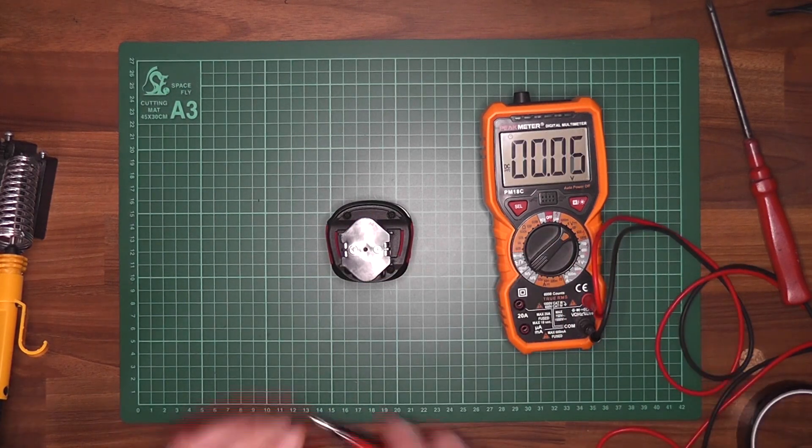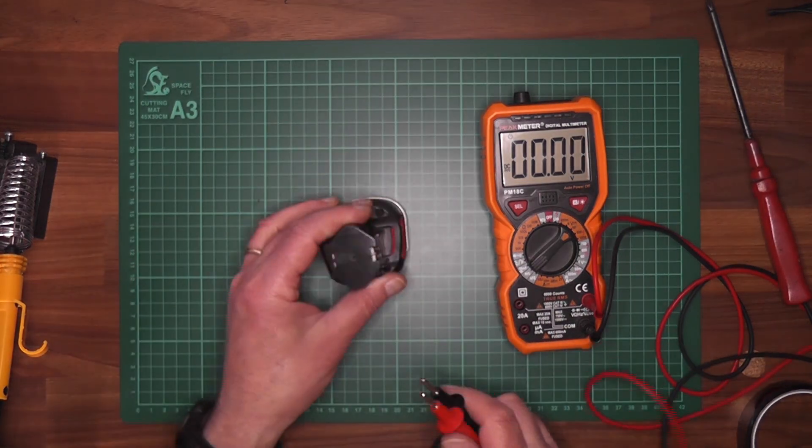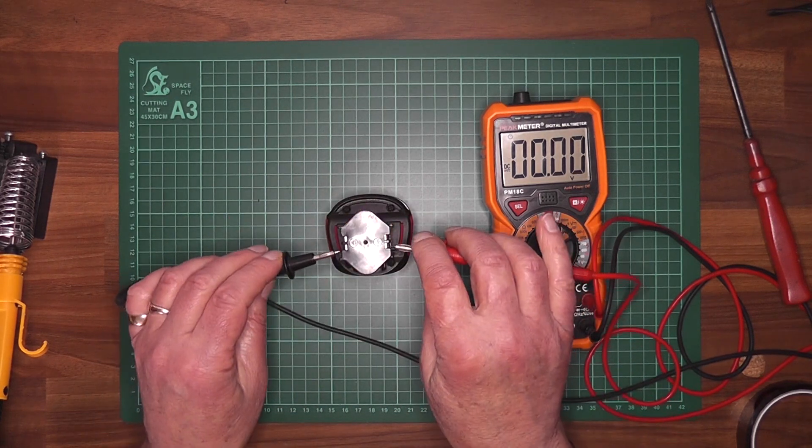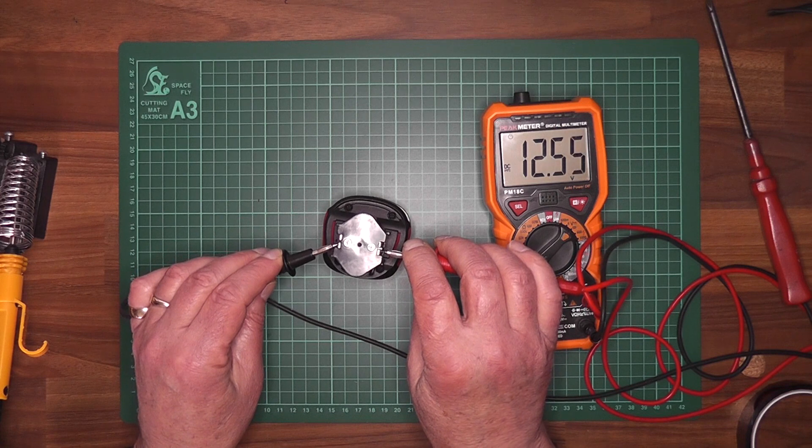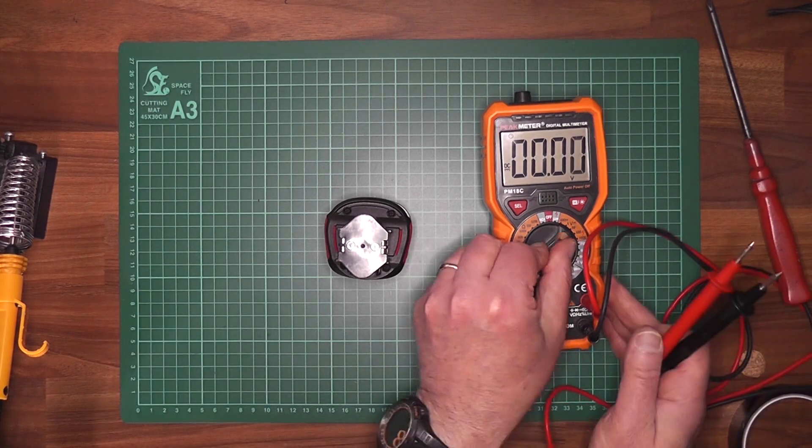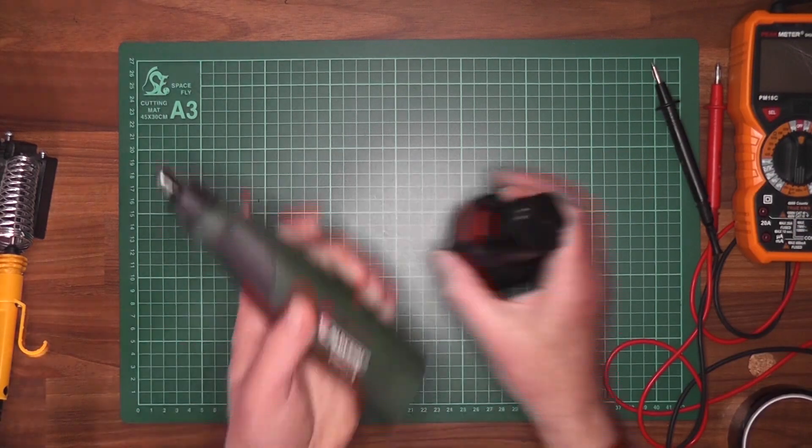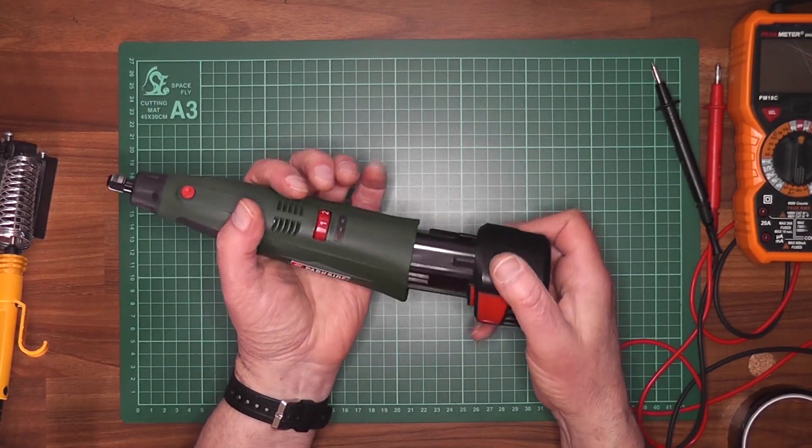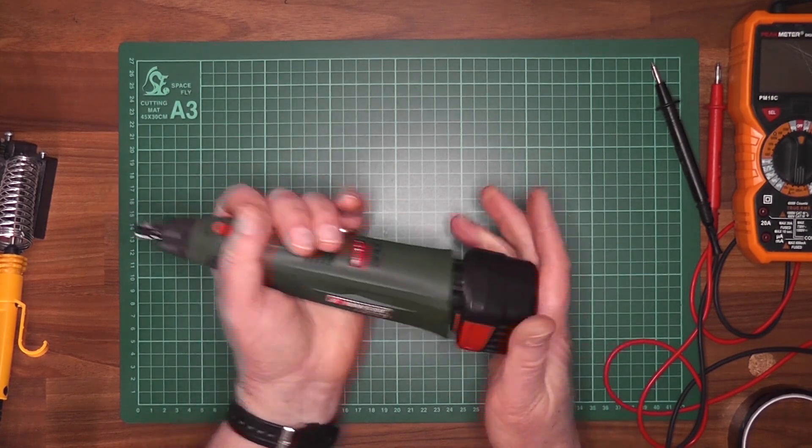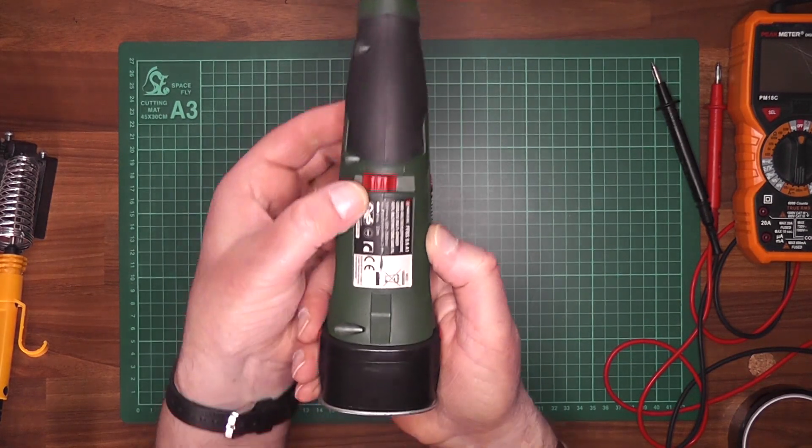So again we have your positive and negative. If you're not colorblind, it should work nicely. So there we go, 12.55, and the next stage is to test. Make sure it's off and now...